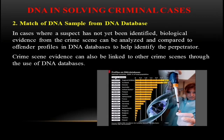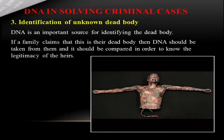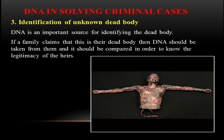In cases where a suspect has not yet been identified, biological DNA evidence from the crime scene can be analyzed and compared to offender profiles in DNA databases to identify the perpetrator. Crime scene evidence can also be linked to other crime scenes through the use of a DNA database. Additionally, DNA is an important source for identifying unknown dead bodies. If a family claims a body, DNA should be taken from family members and compared to verify their claim.